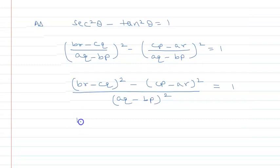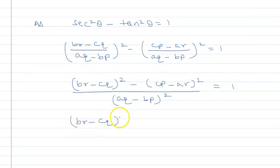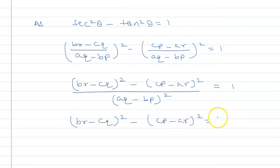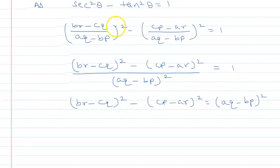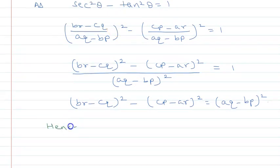Cross multiplying, we get (br − cq)² − (cp − ar)² = (aq − bp)². Hence proved.